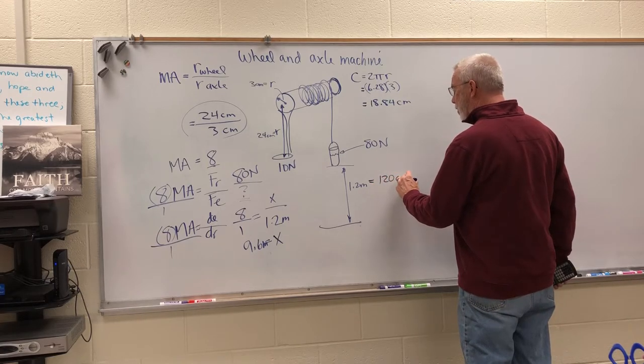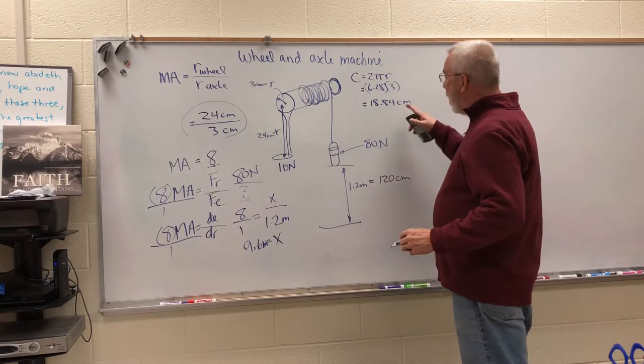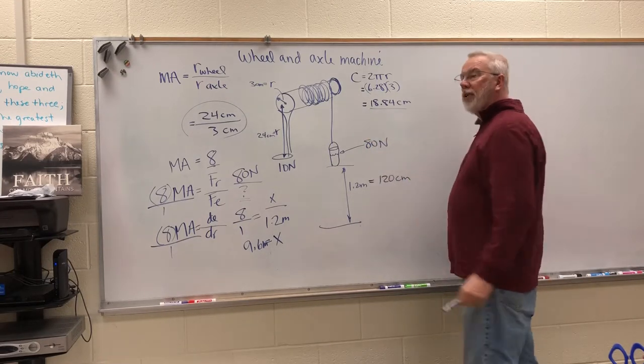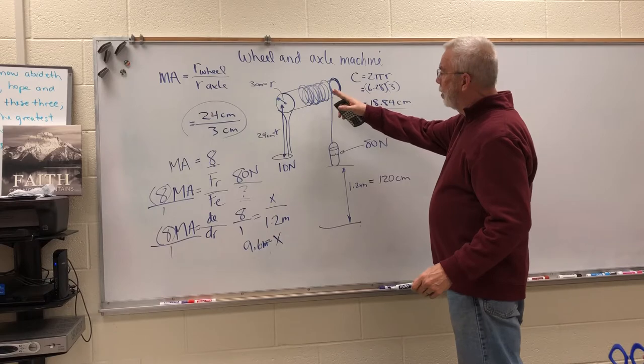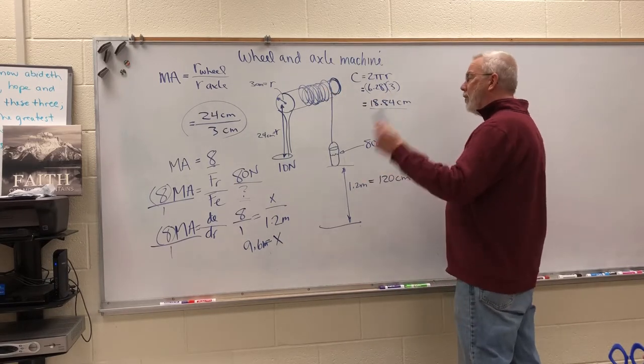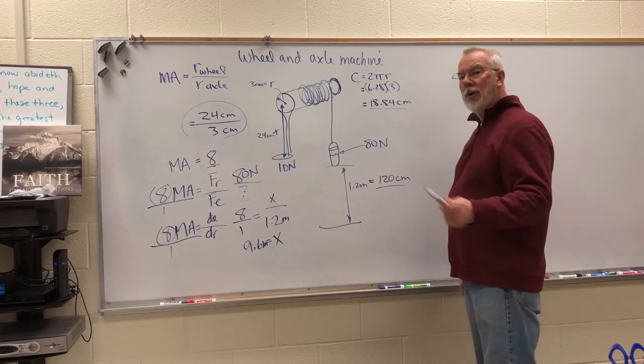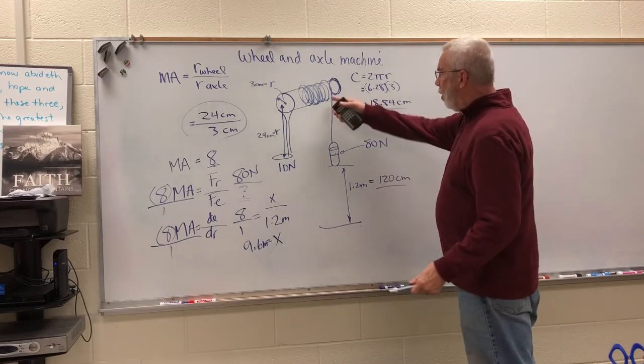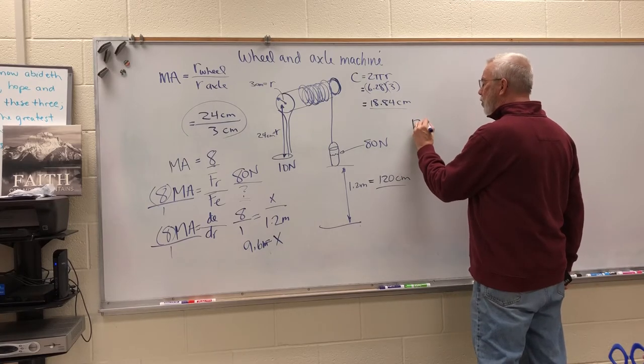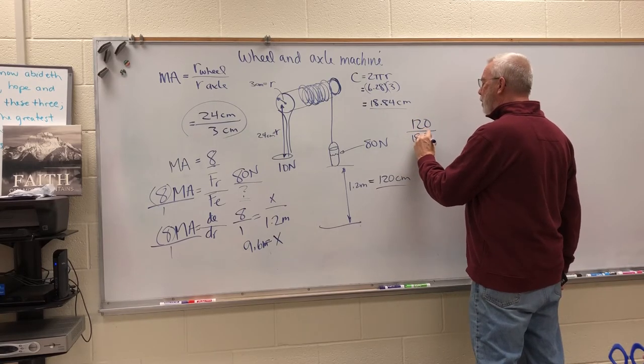And so now I'm trying to figure out if one revolution is going to take up 18.84 centimeters of string around the axle, how many times do I have to turn it to get all 120 centimeters on the axle. And to do that we're going to divide, we have 120 divided by 18.84.